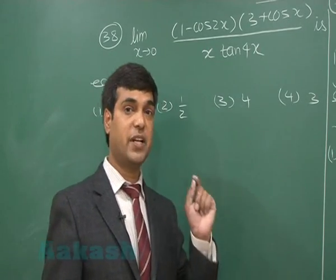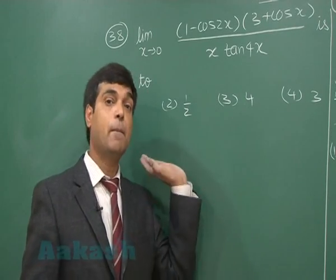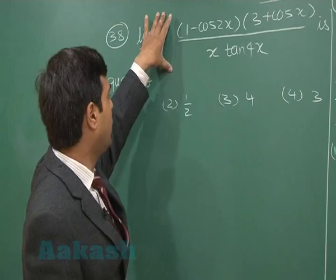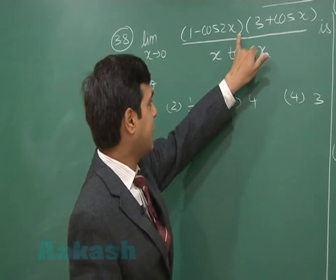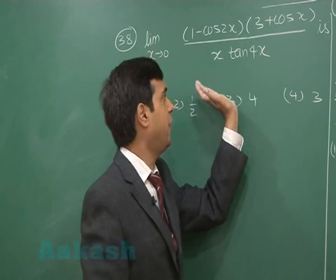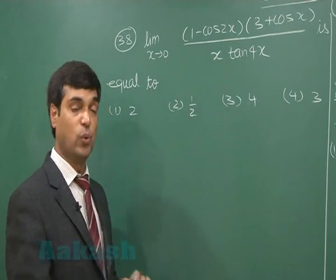Okay, now consider question number 38 of this JEE Main 2015 maths paper code D. Limit x approaching 0: (1 - cos 2x)(3 + cos x) divided by x tan 4x is equal to...